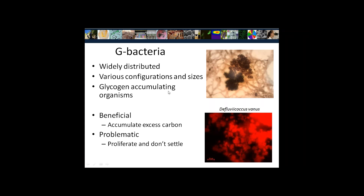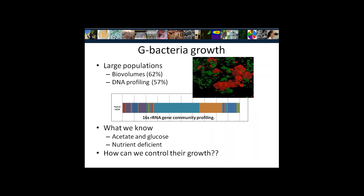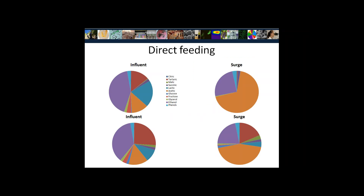These G bacteria have been identified further — the specific name is Defluviicoccus venus. These organisms proliferate to really high levels; by different methods we've shown they sometimes dominate up to 60% of the population, meaning the wastewater treatment plant is no longer diverse and is not healthy. From other industries we know that these G bacteria love acetate and glucose, and they also thrive in nutrient-deficient conditions, so how can we control their growth so they don't cause problems?